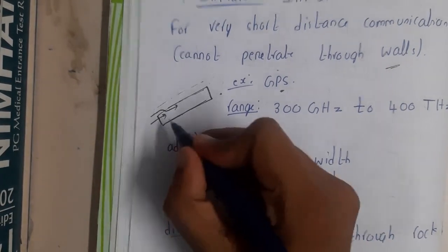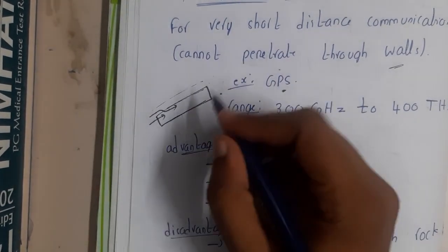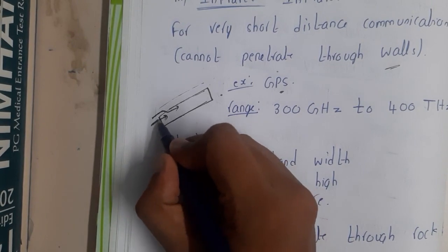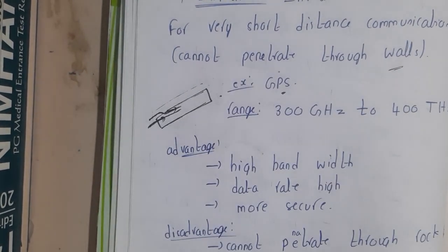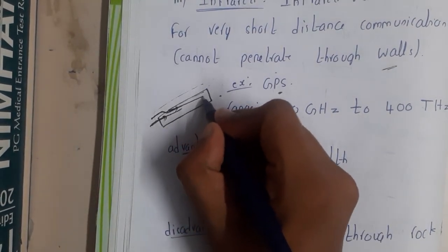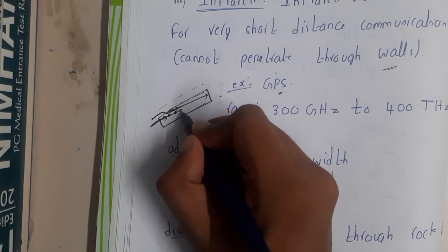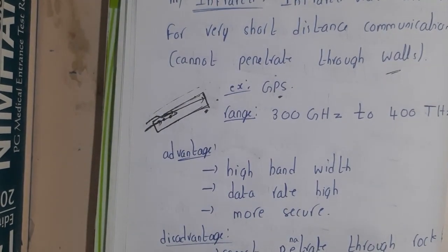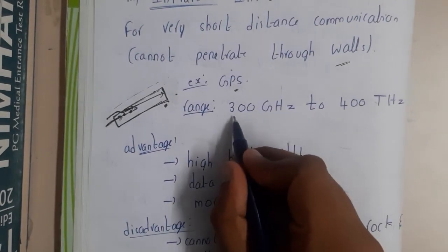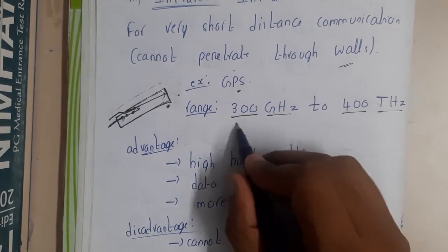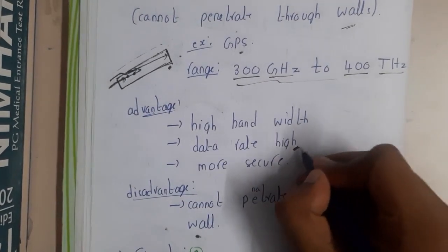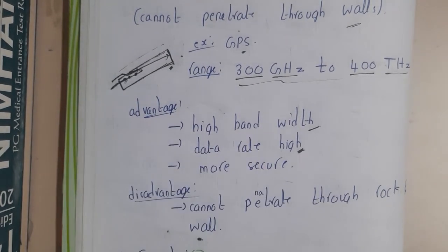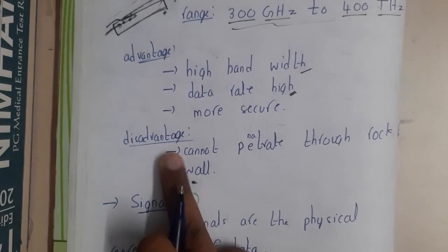When using Google Maps, even if you did not take the bridge and are traveling below it, the app sometimes thinks you are on the bridge. This happens because there is an obstacle — the road is above you. These waves cannot penetrate through walls. The frequency range is 300 gigahertz to 400 terahertz. Because the frequency is really high, the data transmission rate and bandwidth are also high, allowing for fast data transfer over short distances.